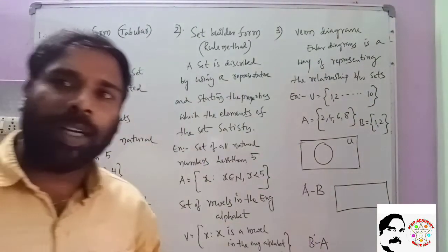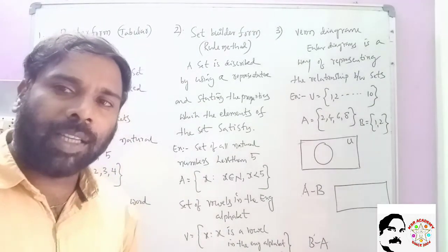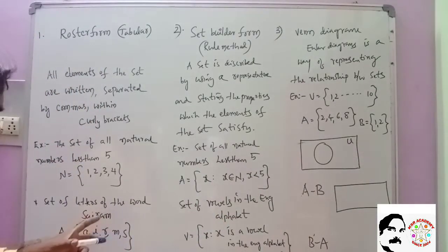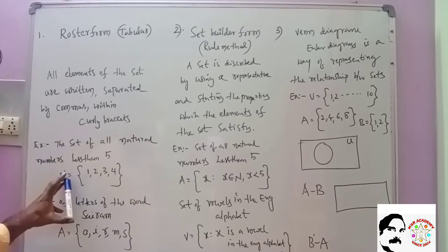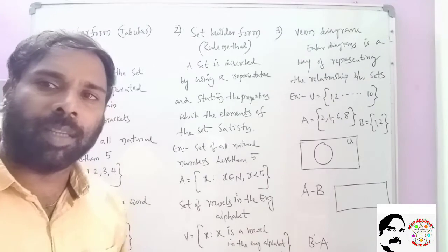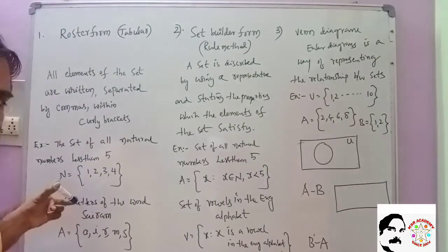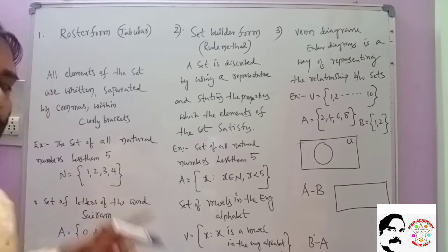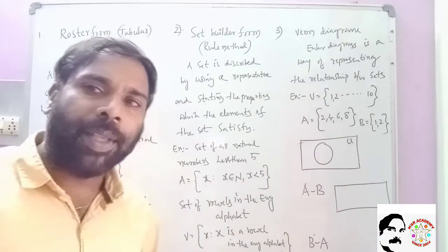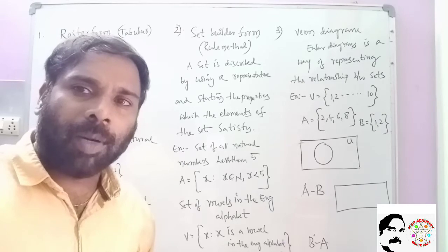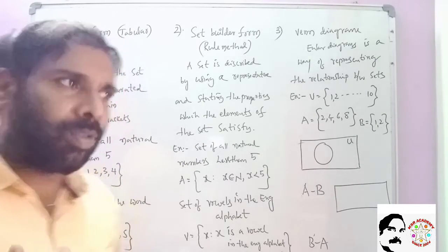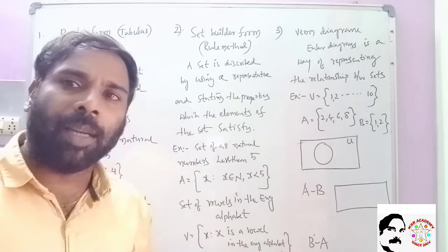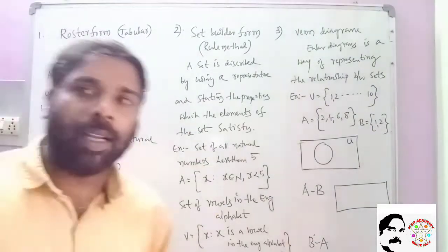We can convert this into the Roaster Form. The set of all natural numbers less than 5 gives us 1, 2, 3, 4 — since 5 is not less than 5. Also, the set of all letters of the word Sairam — my name is Sairam — in Roaster Form or tabular form.